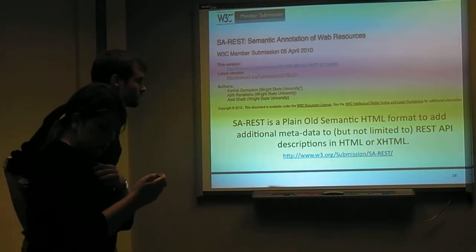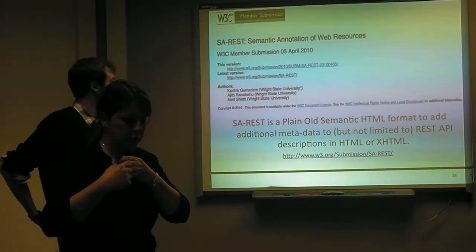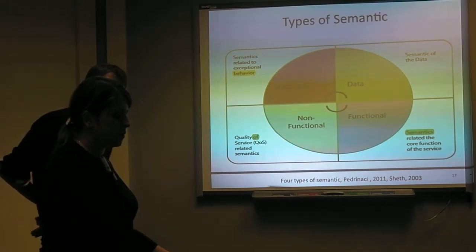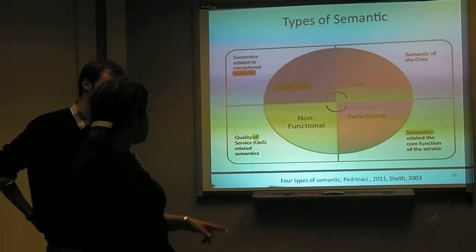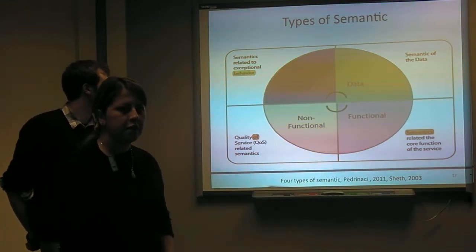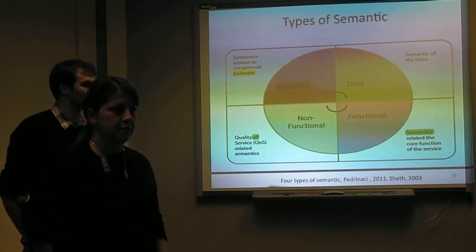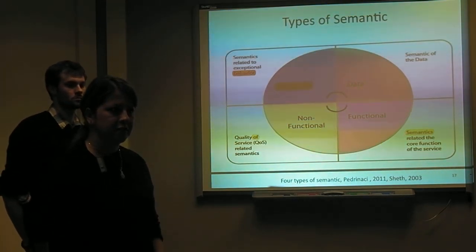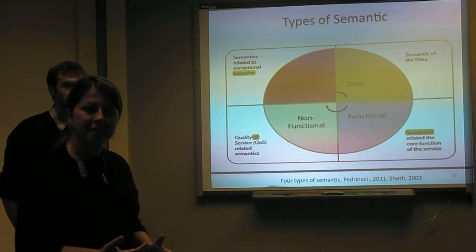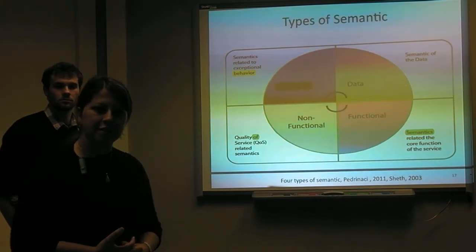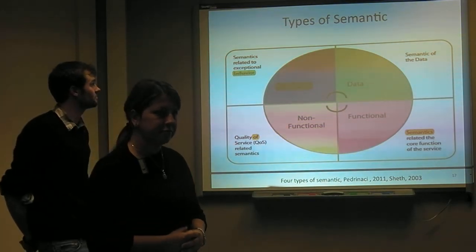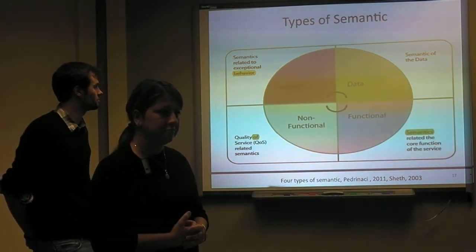People are moving to SRS, which is the second part of our presentation. You can see these four types of semantics were first described in a paper in 2003 and still in 2011 we have the same thing. Do you have any idea if there is another kind of semantic? Are there any other types of semantics we can think of for services?